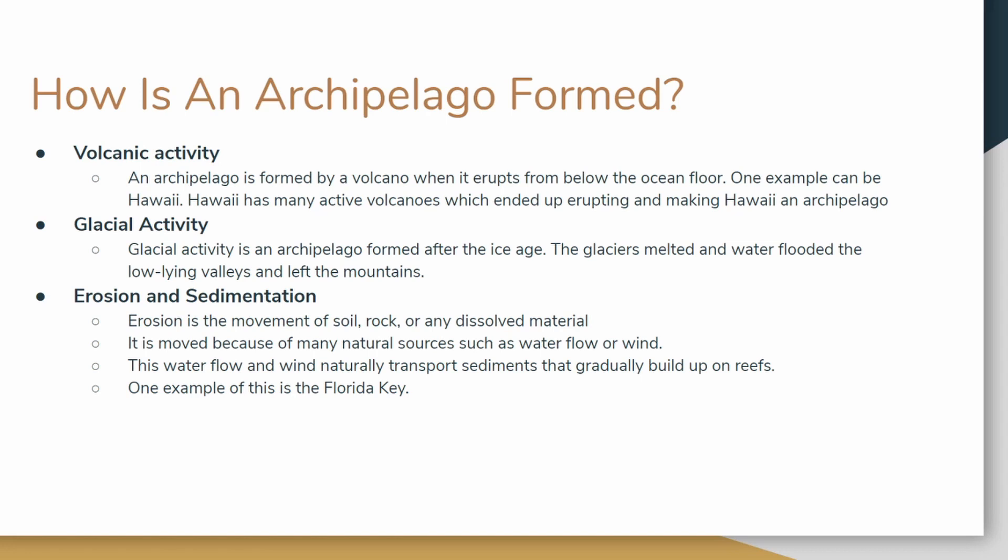The first one is volcanic activity. An archipelago is formed by a volcano when it erupts from below the ocean floor. One example can be Hawaii. Hawaii has many active volcanoes, which ended up erupting and making Hawaii an archipelago.